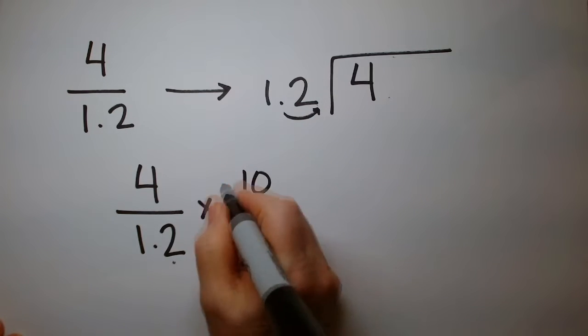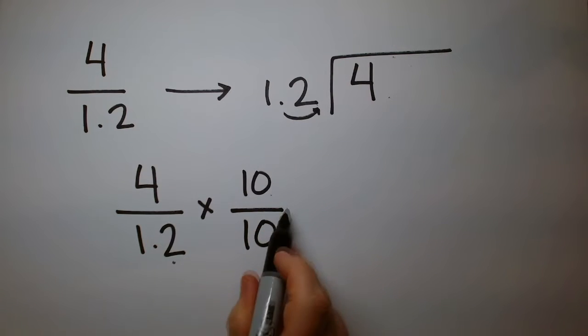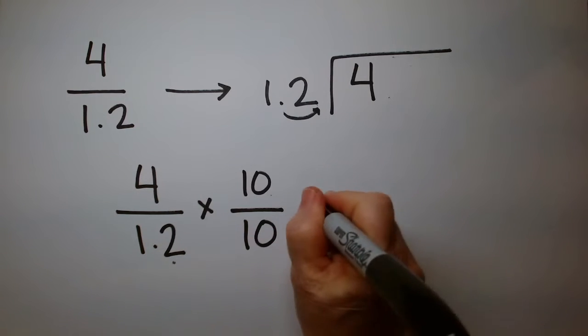I'm going to multiply the original fraction by a clever form of 1, which is 10 over 10. This does not change the problem when you multiply a number by 1.